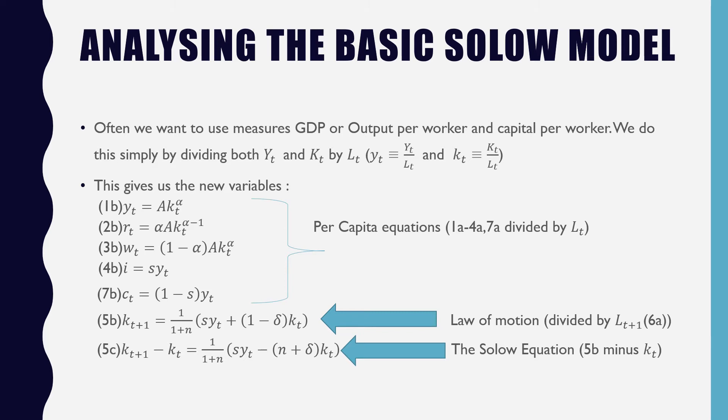This gives us a set of lowercase variables, where our per capita equations are between 1a to 4 and 7, which give us our output per capita, rental rate per capita, wage rate per capita, investment per capita, or consumption per capita.